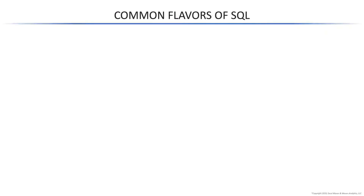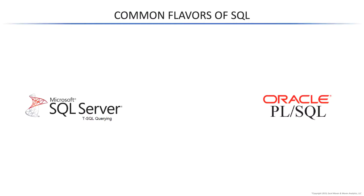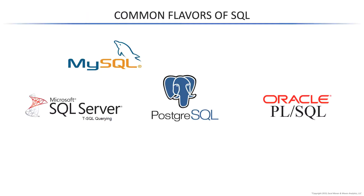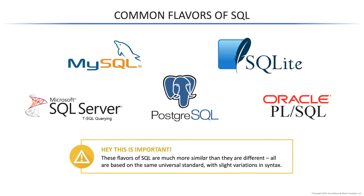Let's talk a little bit about the most common flavors that you'll see. You've got your enterprise solutions — Oracle and Microsoft SQL Server — then you've got some free solutions: MySQL, Postgres, and SQLite. The most important thing to remember is that these different flavors are much more similar than they are different. They're all built on the same universal standard and the differences you'll find are minor syntax changes. So anything you learn today in MySQL is going to be broadly applicable to any of these other four flavors.